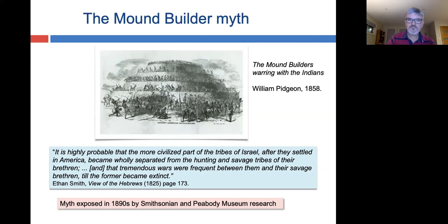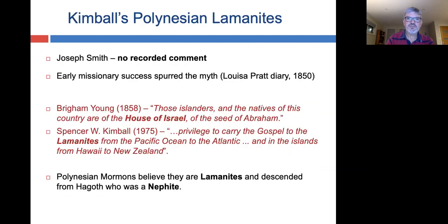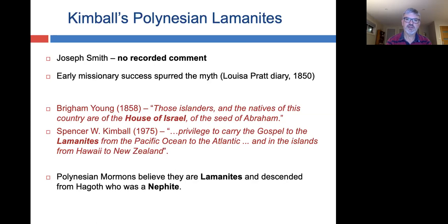The Lamanite myth expanded even further when President Kimball declared in 1975 that the Polynesians in the Pacific were descendants of the Lamanites. Interestingly, Joseph Smith made no recorded comments about Polynesians being linked to the Lamanites. Early missionaries Addison Pratt and his wife Louisa were among the first teaching in the Pacific, and they found that Polynesians were much more receptive to the message.